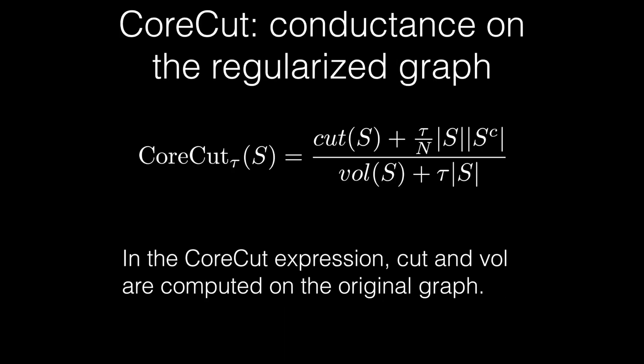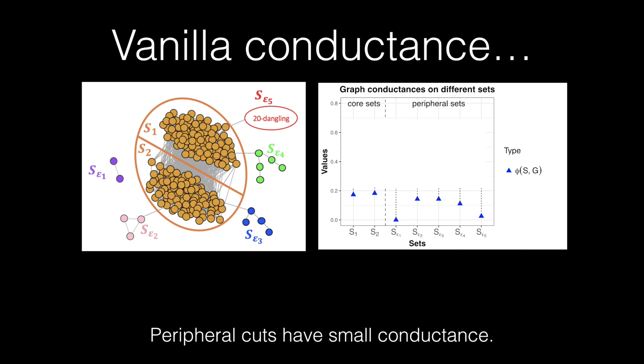This core cut tends to find the core sets instead of periphery sets with small nodes. Here is an example network with two core sets and several periphery sets with several nodes. Without regularization, graph conductance tends to find periphery sets since they have smaller conductance.